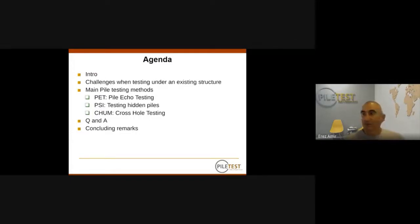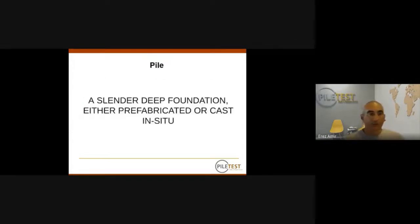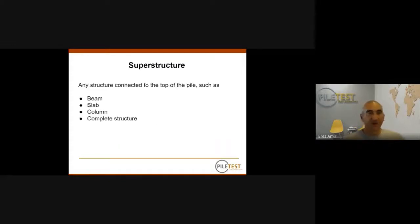Some definitions: a pile is a slender deep foundation element. It can be precast or cast on site. When I say slender, it means it's much longer than it is wide. A superstructure, for this presentation, is just anything connected on top of the pile — it can be a beam, a slab, a column, or the complete structure — anything which is firmly connected to the top of the pile.